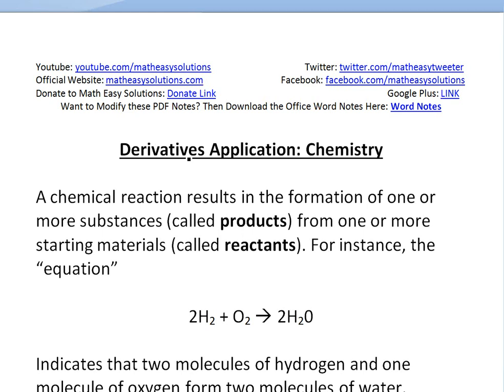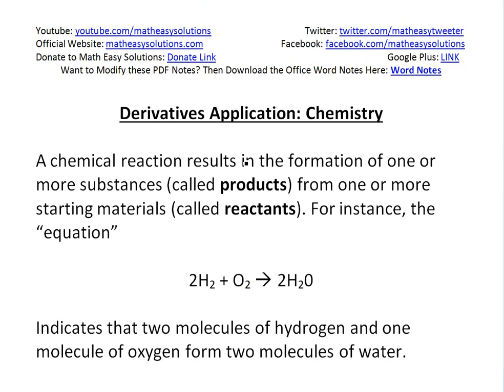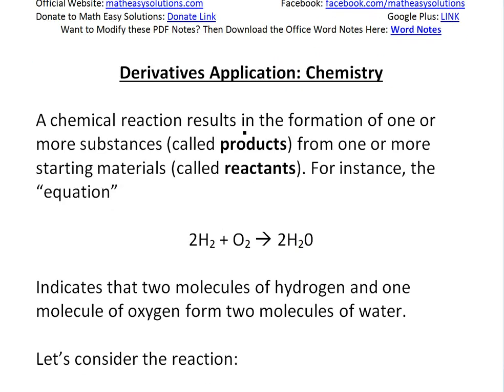Hi, it's time for another math easy solution. I'm here to discuss another derivative's application and look at chemistry and the rate of reaction, and I'm going to show how it can be defined using a derivative. Basically, a chemical reaction results in the formation of one or more substances called products from one or more starting materials called reactants.